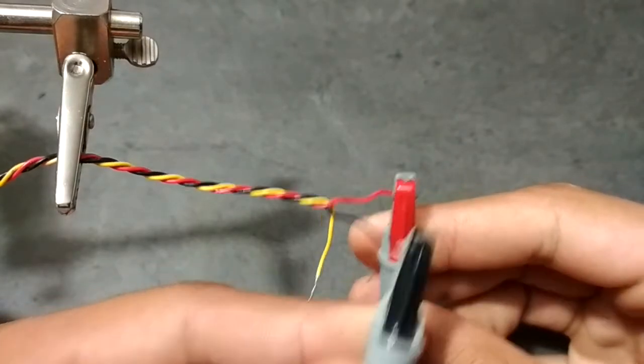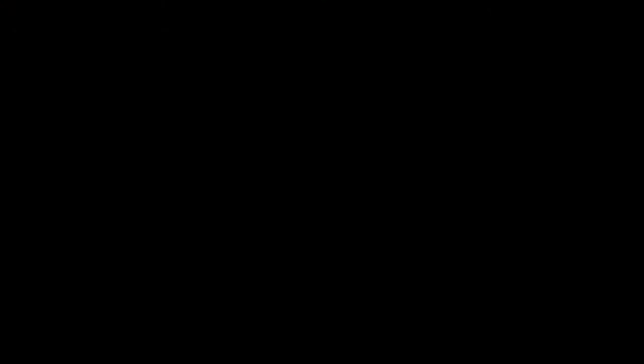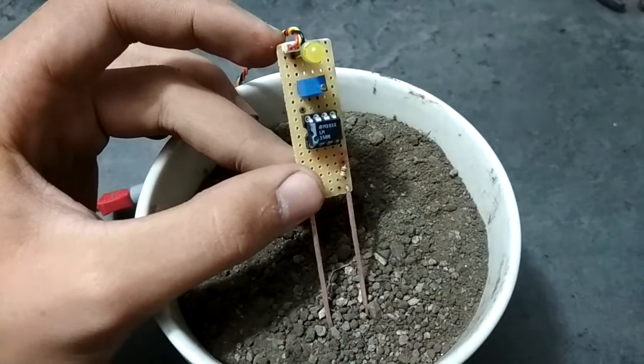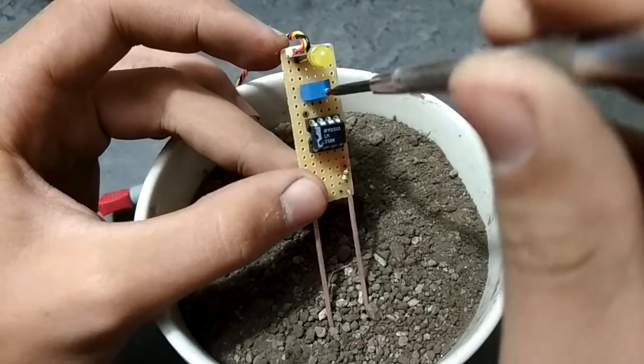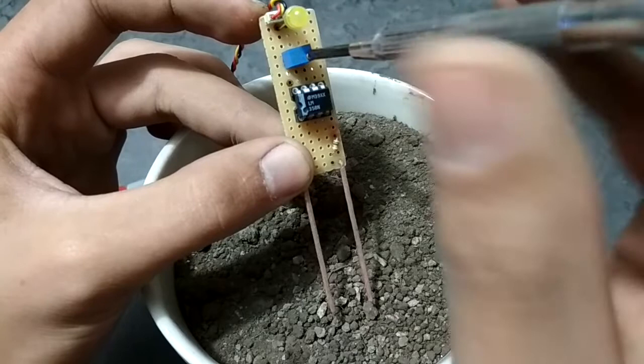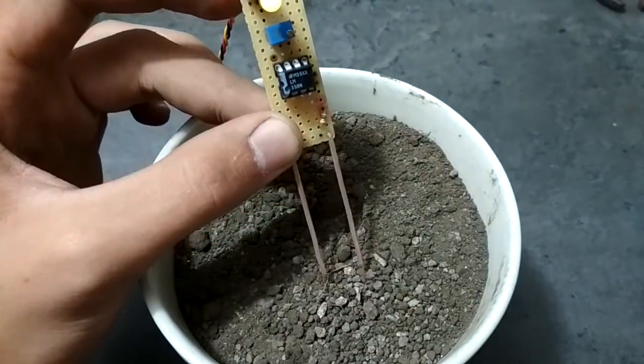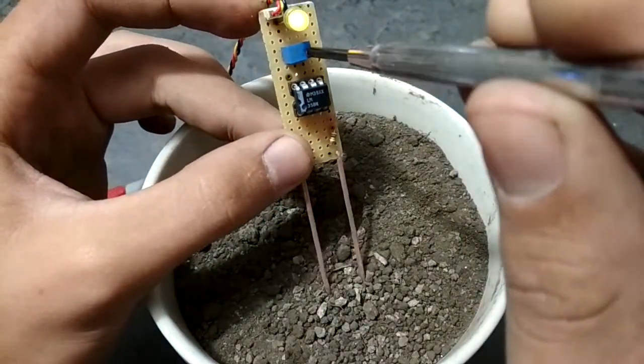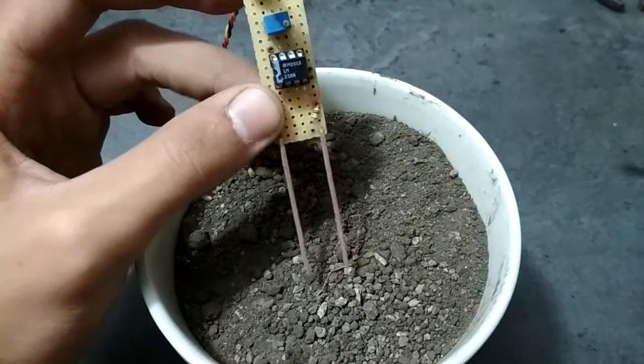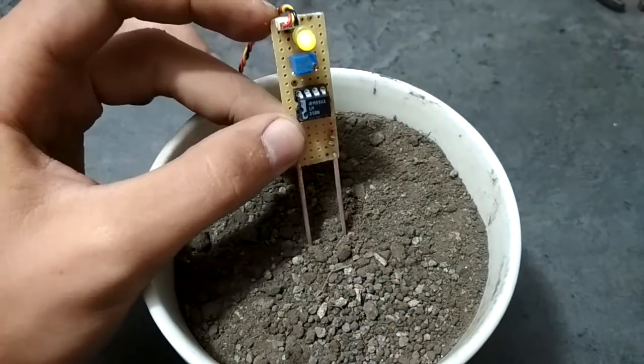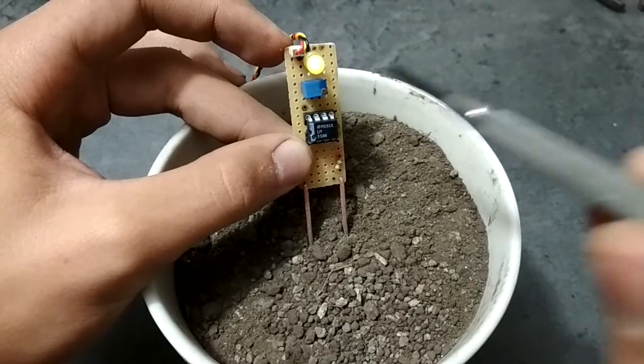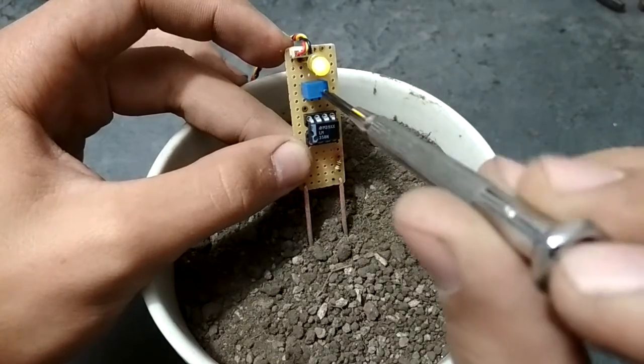I start by giving it power. Anything between 5 and 15 volts is okay. Keep in mind though that the output voltage will be about the input minus 1 or 1.5 volts. This means that if you're using it for example with an Arduino or a microcontroller that uses 5 volt input logic, you shouldn't give the sensor any more than 6 volts or you might destroy your microcontroller.